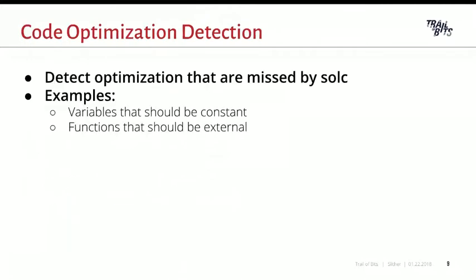In addition to detecting bugs and vulnerabilities, you can also detect optimizations missed by the compiler. For example, if you have a state variable which is never written and always has the same value, you can optimize it by declaring the variable as constant. Slither can detect this kind of potential constant variable within a second, and similarly can detect functions that could be declared as external.